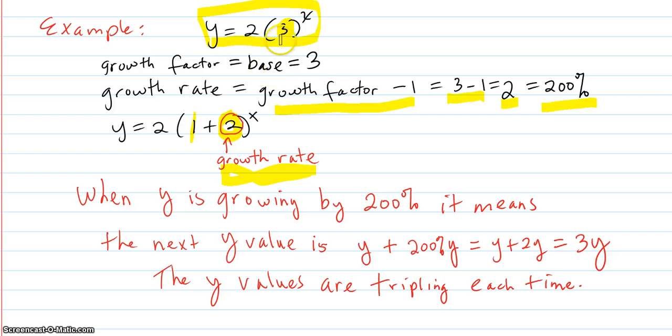Let's see if that makes the same thing as tripling. When y is growing by 200%, it means that the next y value is the previous plus 200% of the previous. Well, 200% is 2. So y plus 2y is 3y. So indeed, the values are tripling each time.